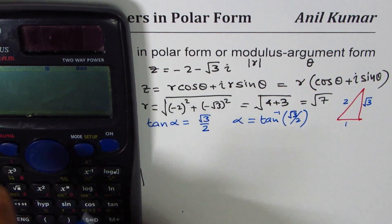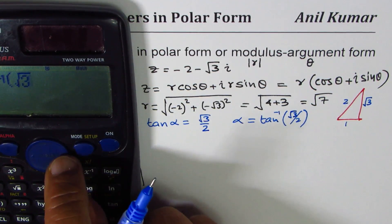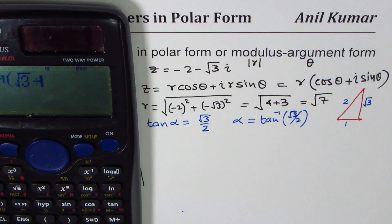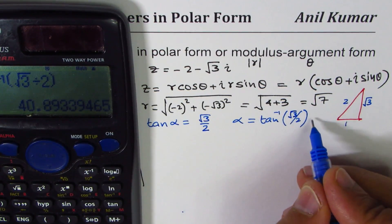So α is tan inverse of √3 over 2. We do shift tan inverse, within bracket we have √3, and then we'll divide this by 2.